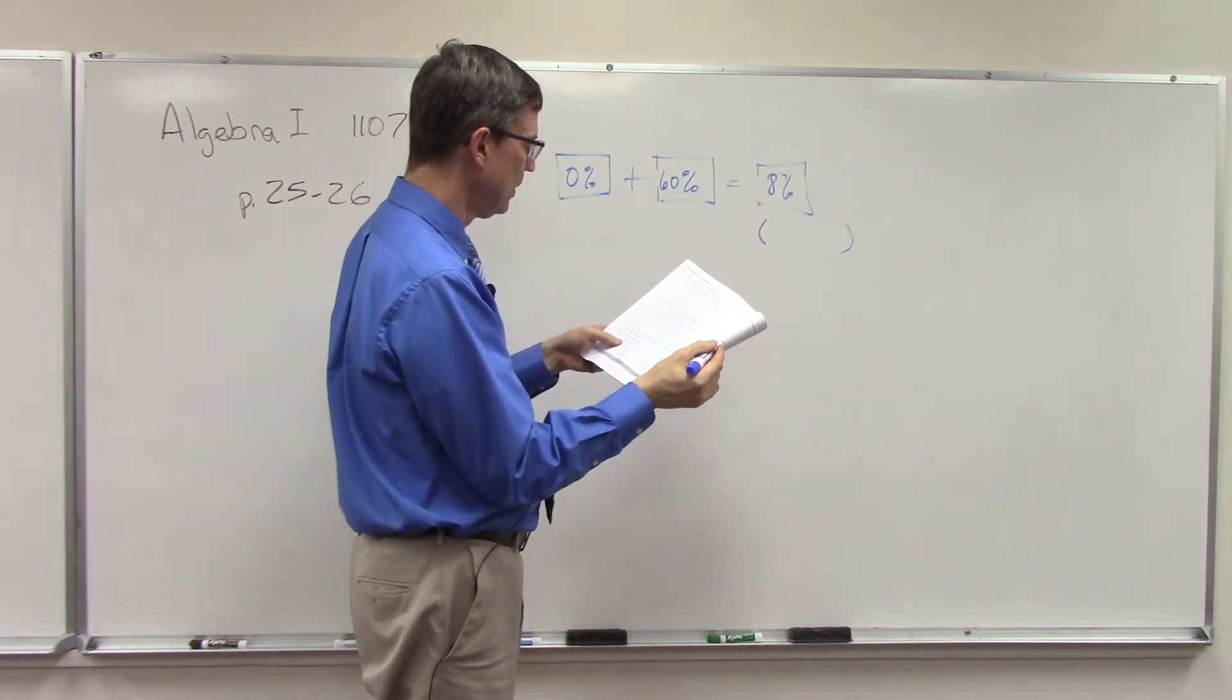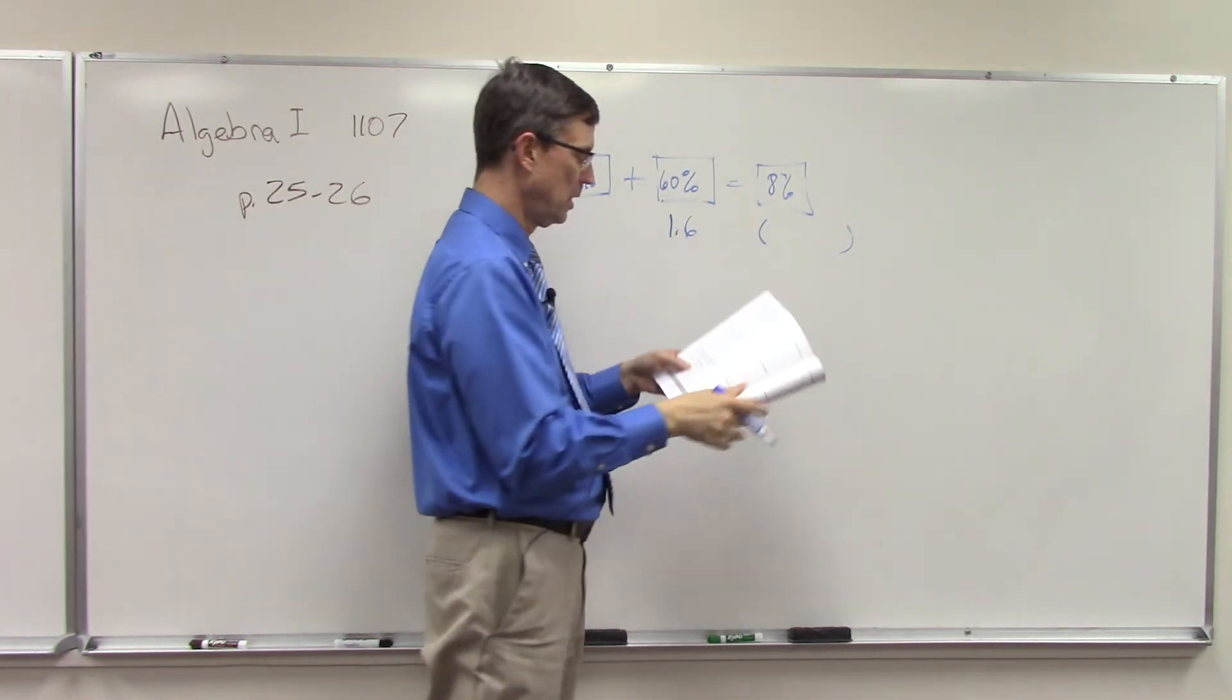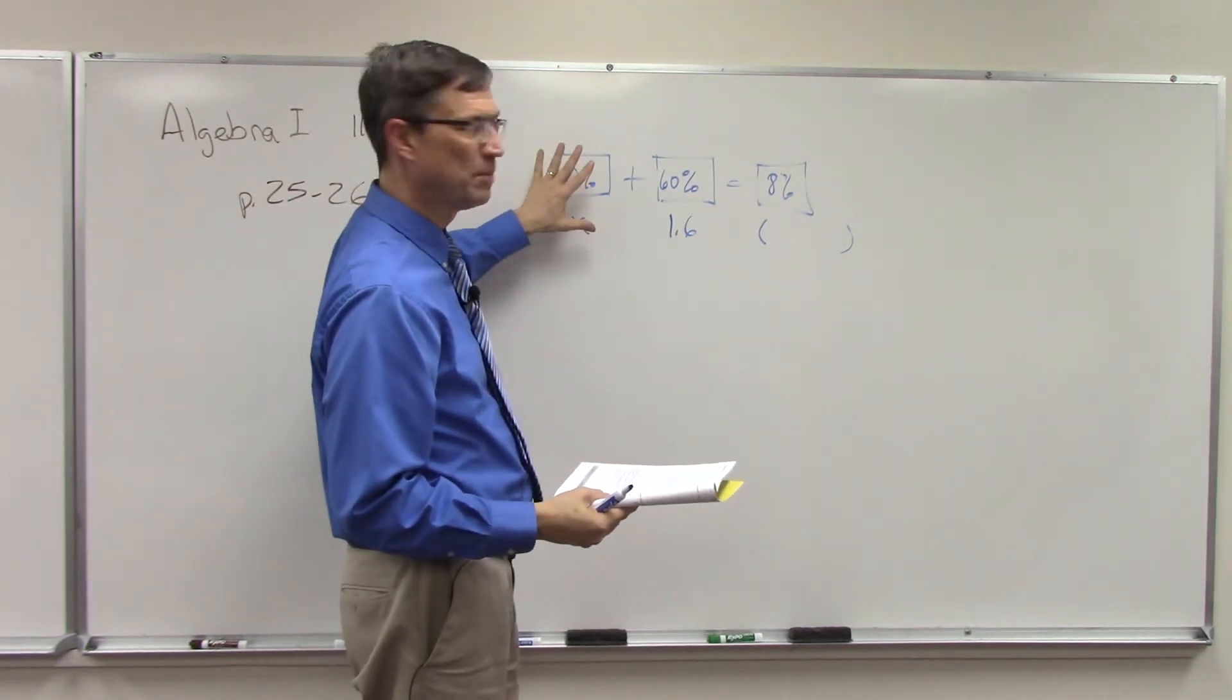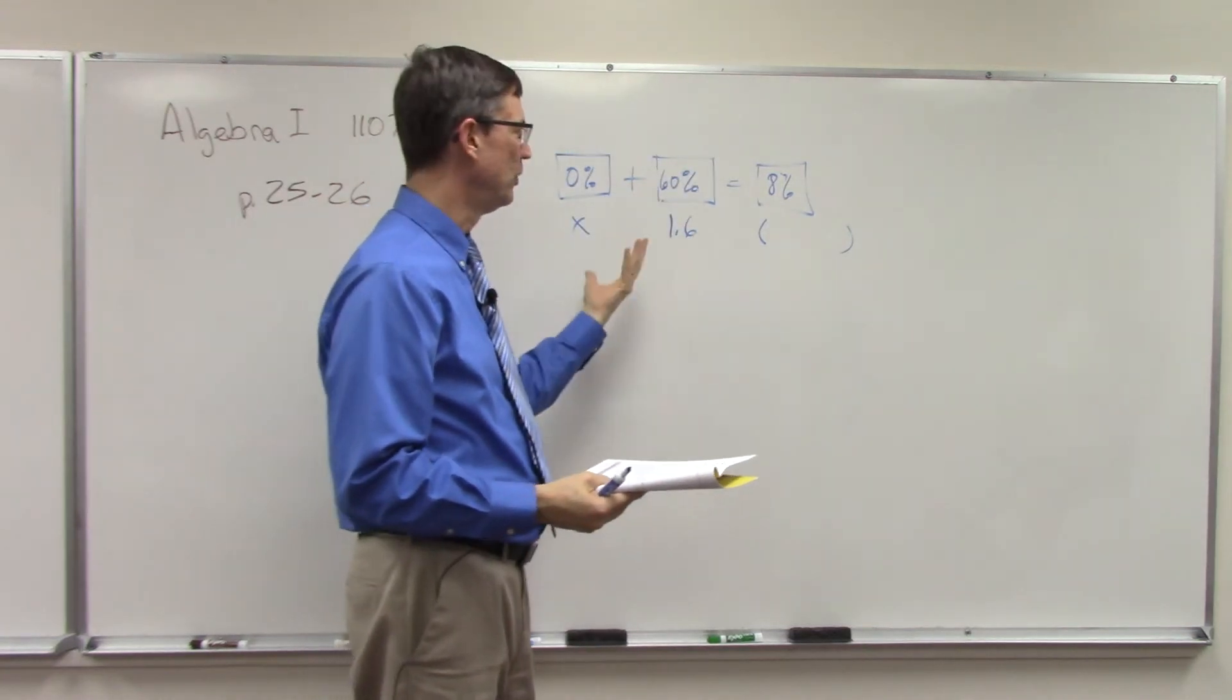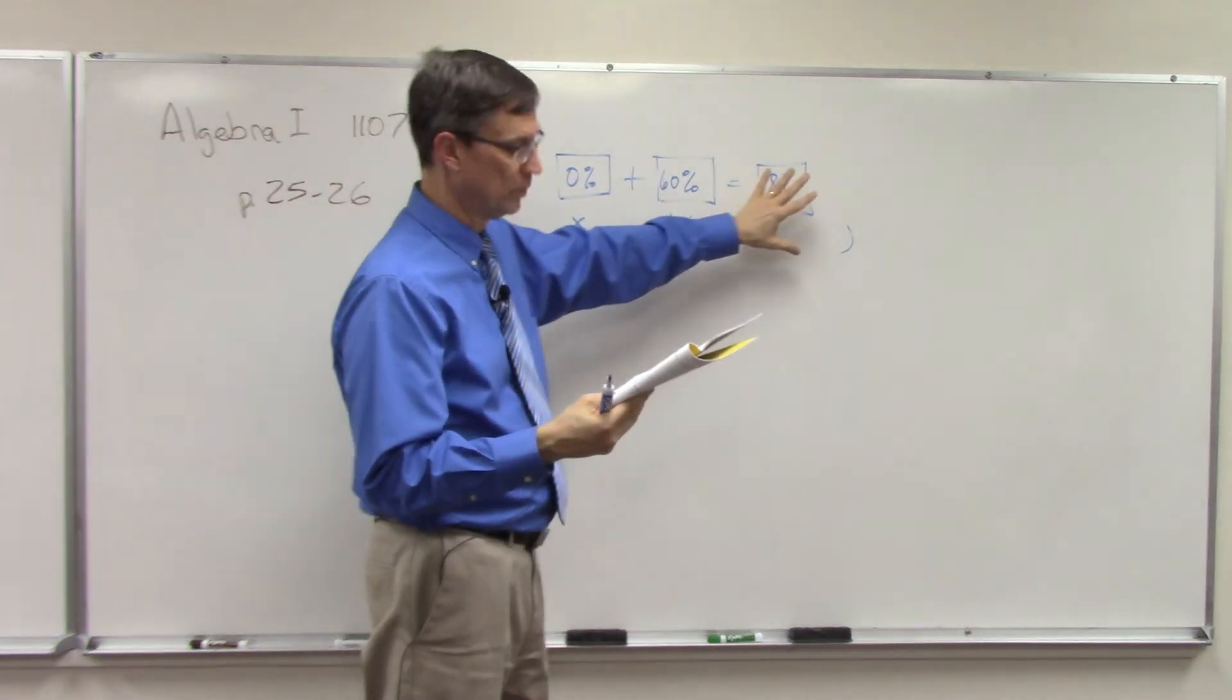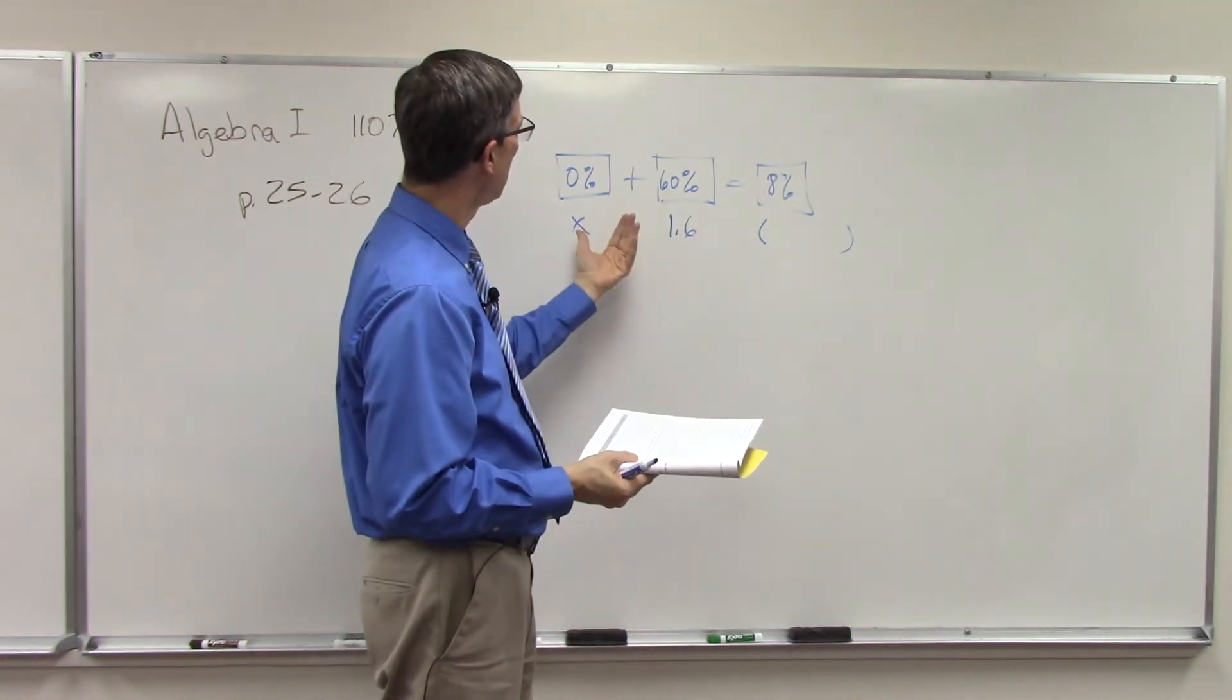He's adding 1.6 liters, so the 1.6 goes here. We actually don't know how much he had in the car to start with. The reason I do this one first is because he's starting with this, he's adding the antifreeze. They actually do it reversed as I'm looking at the pace here, they have this first. Plus this equals this. Doesn't matter because we can switch the order we're adding things.